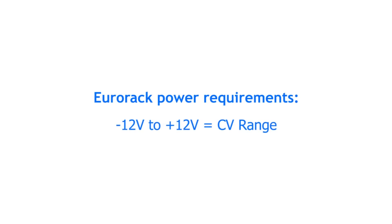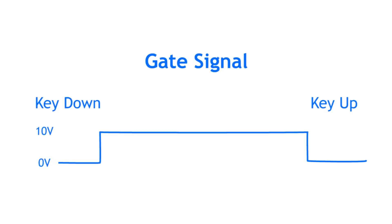There are several common signal types and ranges used in Eurorack modules. A gate signal often corresponds to a held-down keyboard key. When the key is pressed down, the voltage immediately jumps from 0 volts to a set control voltage — for example, 10 volts — and it stays there until the key is released. Like this, your modular synth knows when and how long a key is pressed.